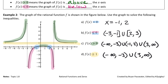From a graph, above or below is easy — it's visual. Greater than means above the x-axis, less than means below. Even though the question says greater than or equal to, you will never actually touch the horizontal asymptote. It gets infinitesimally close but never touches — that's what an asymptote is. So no brackets are needed.